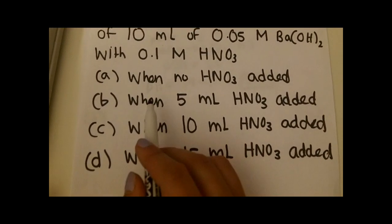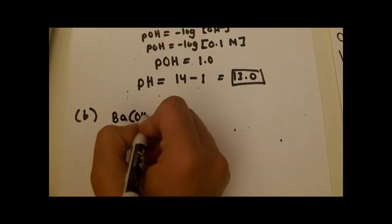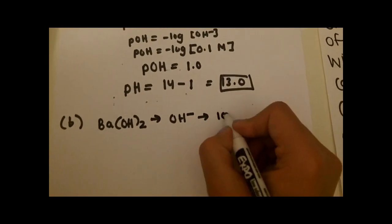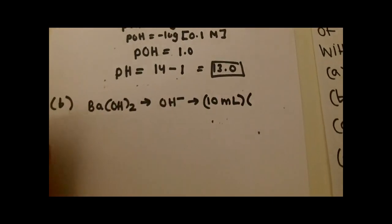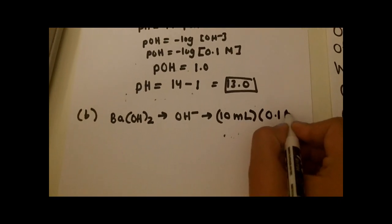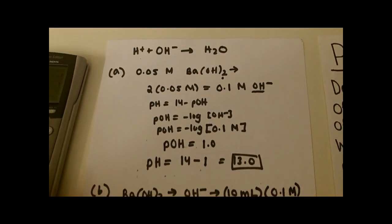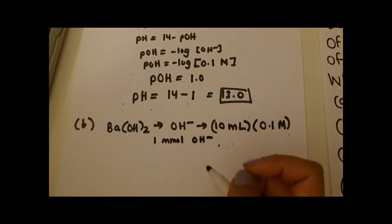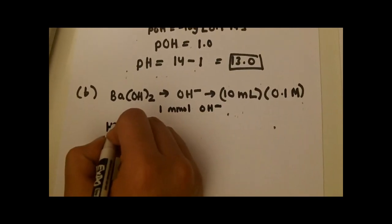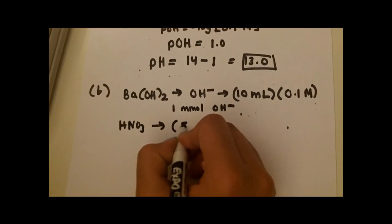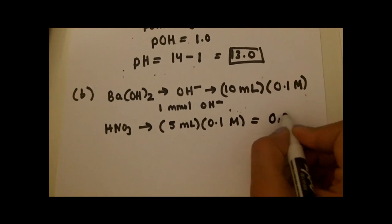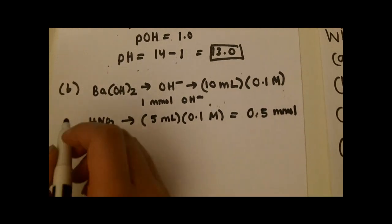The next part asks for pH when 5 mL of nitric acid is added. For OH⁻, we have 10 mL at 0.1 molar, giving us 1 millimole of OH⁻. For H⁺ from the nitric acid, we multiply 5 mL times 0.1 molar, which gives us 0.5 millimoles. We'll keep these in millimoles, as that'll be easier.